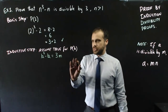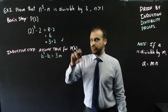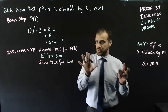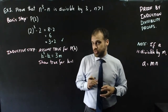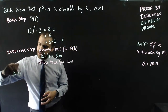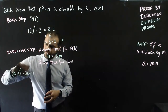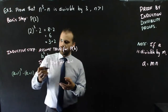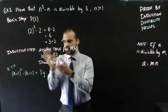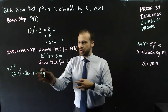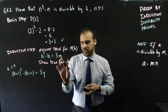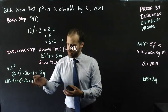The next step of our inductive step is to show that if that's true, it's also true for k plus 1. We're going to sub k plus 1 in, so we say k plus 1 cubed minus k plus 1, and we need to show it equals 3q. This is what is required to prove — that k plus 1 cubed minus k plus 1 can be expressed as 3q, where q is just some number. This is my left-hand side, and 3q is my right-hand side.